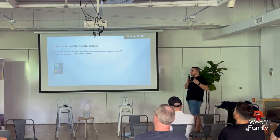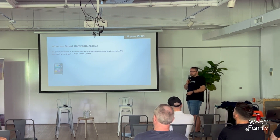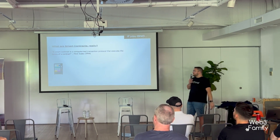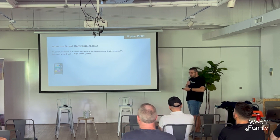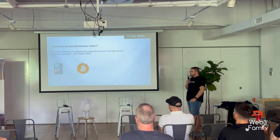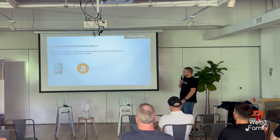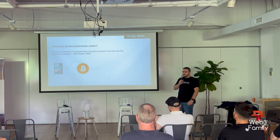A vending machine is the very basic form of a smart contract. It has three defined inputs: you select what you want, you enter money, and you get something out of it. It's always deterministic in the sense that if you repeat the same process, you're always going to get the same results. A few years after that, we evolved to using more complicated financial instruments.